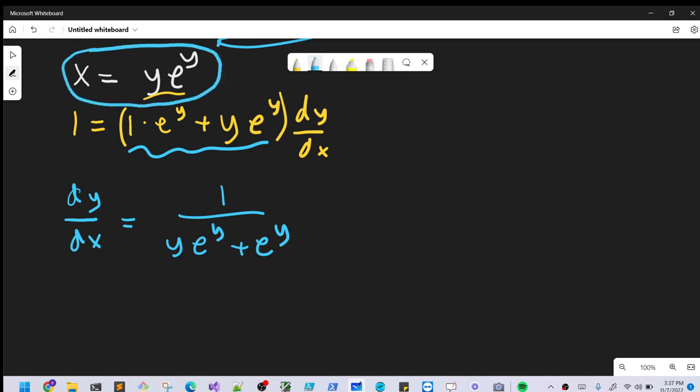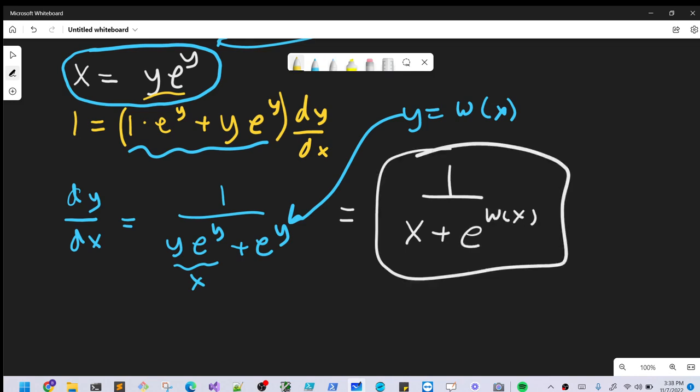Now for ye^y, we have this right here, this piece is going to be x. And then we also know from our original substitution that we had y was equal to W(x). So we can plug that value in right there. And so what we're left with is going to be 1 over x plus e^(W(x)). That's it. So the derivative of the Lambert W function using implicit differentiation. Thanks for watching.